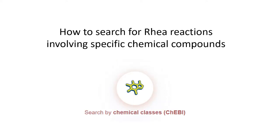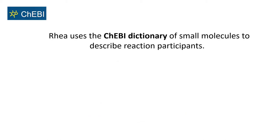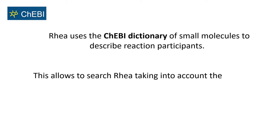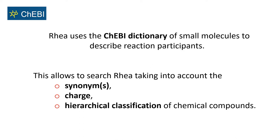In this tutorial, we will learn how to search for RIA reactions involving specific chemical compounds. RIA uses the ChEBI dictionary of small molecules to describe reaction participants. This allows searching RIA taking into account the synonyms, the charge, and hierarchical classification of chemical compounds.